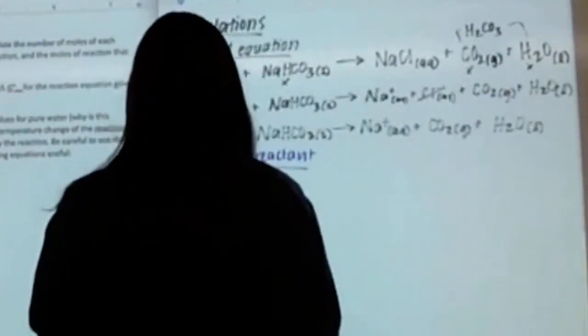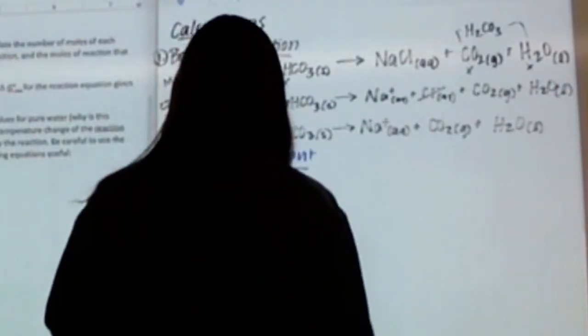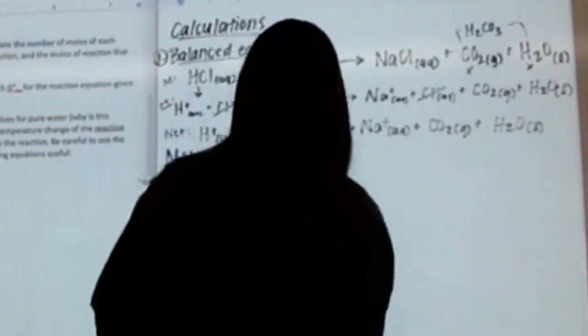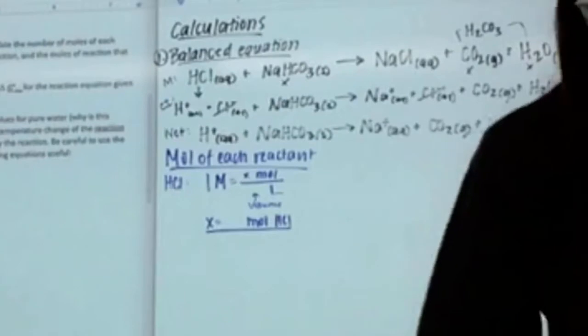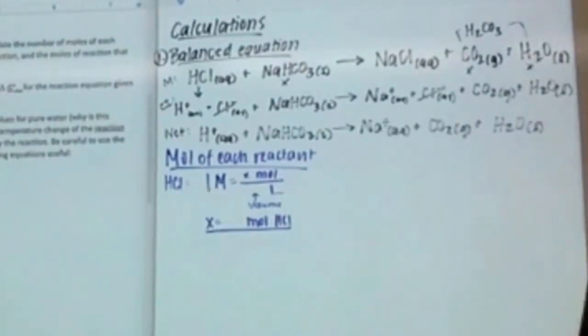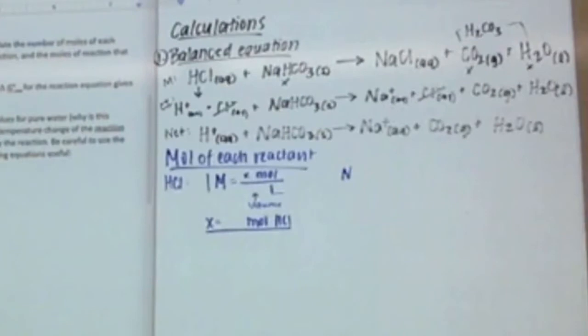You can plug in your volume and solve for moles. Plug in your volume so you can solve as we go through. What was your volume — 95 milliliters? You can keep it to three significant figures.